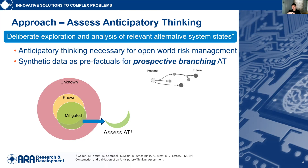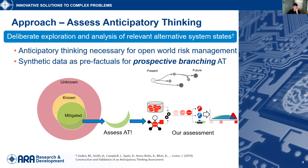There are three types of anticipatory thinking. One of them is prospective branching: assume something is true in the future and then see what the resulting actions would be. This diagram illustrates what our assessment for anticipatory thinking looks like, and we'll walk through each of those pieces with the remaining slides.